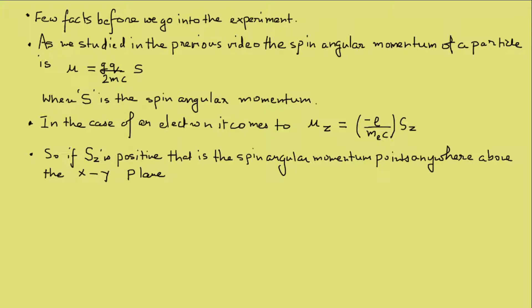In the case of an electron, the magnetic moment in the z direction is mu z equals minus e over me, me which is the mass of an electron, into c into s z. Due to the minus sign of the negative charge, the direction of the magnetic moment is opposite to the direction of the spin angular momentum.